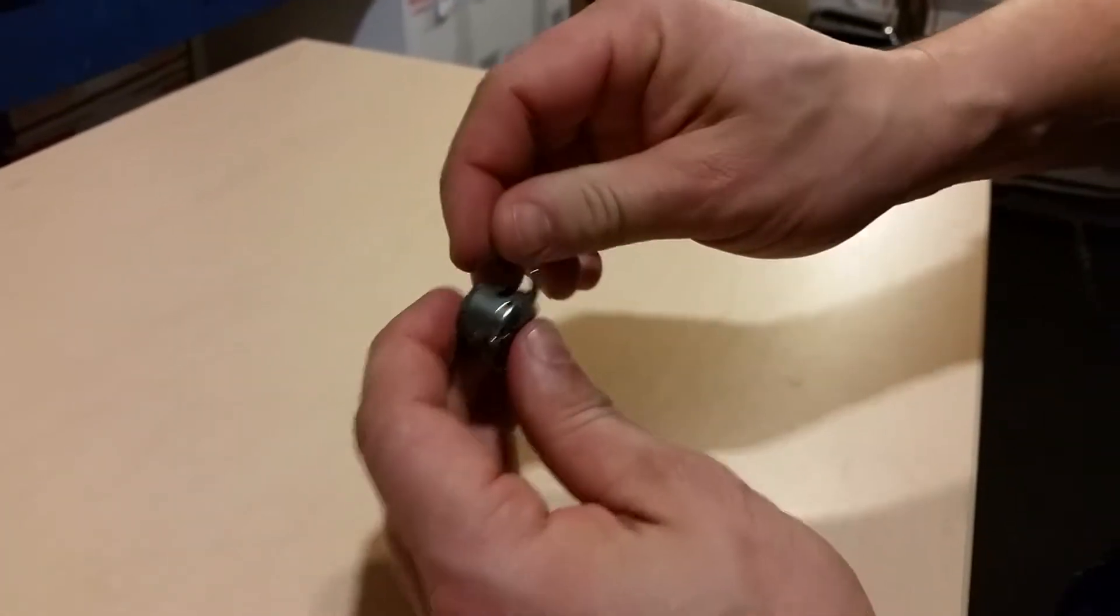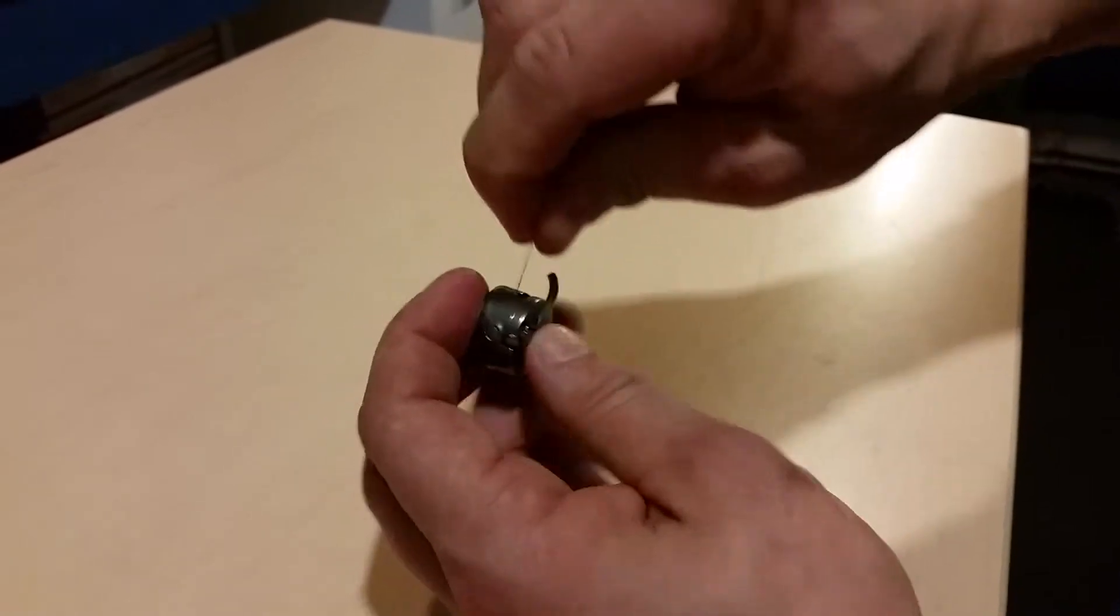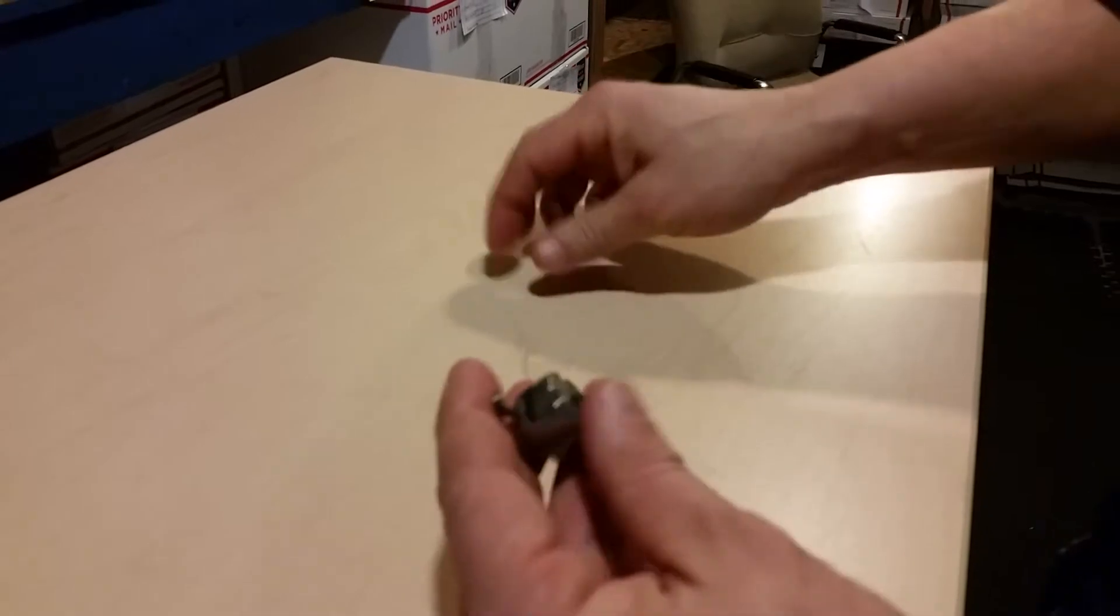Now you turn it around and it's ready to put into your machine. You should be able to hold it and pull thread out of it. I'm going to do it again.